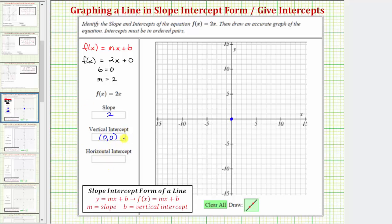Notice in this case the origin is the only point that's also on the horizontal or x-axis, which means the origin is also the horizontal intercept. So the horizontal intercept would also be given by the ordered pair zero comma zero.